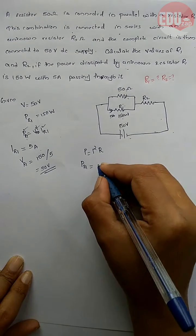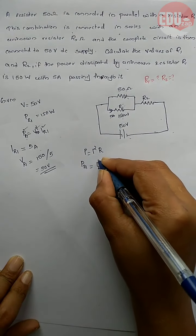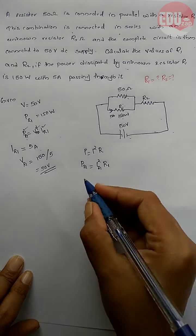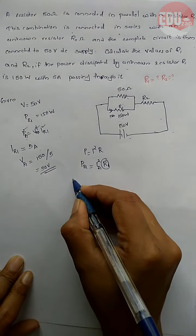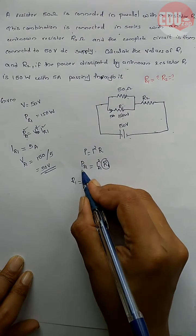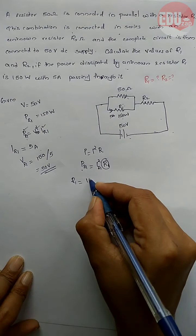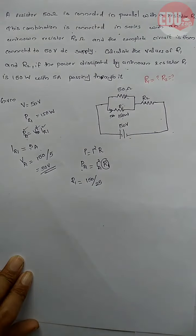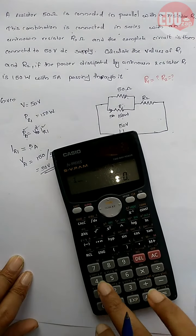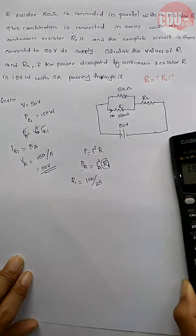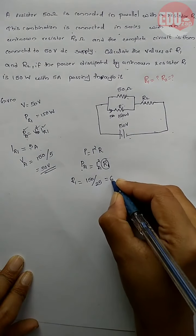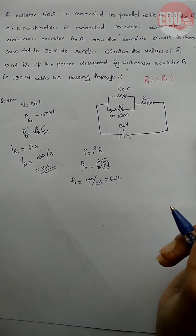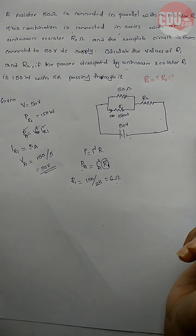Voltage across R1 equals I times R1, so R1 equals P divided by I squared. P_R1 is 150, and I_R1 is 5, so I squared is 25. Therefore R1 = 150 divided by 25 = 6 ohm. So R1 is 6 ohm.